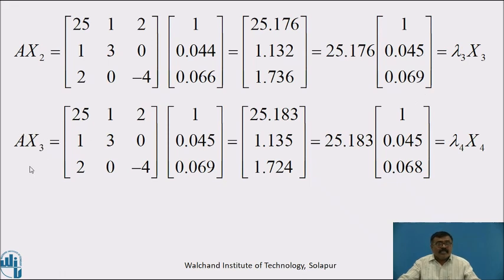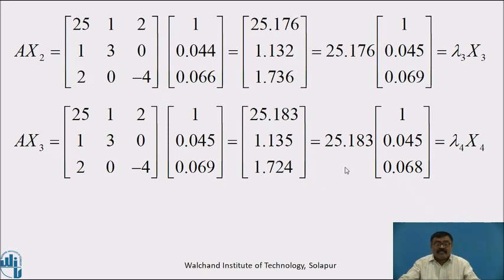Fourth iteration: A × X3 = [25, 1, 2; 1, 3, 0; 2, 0, -4] × [1; 0.045; 0.069]. Taking the multiplication, we get the matrix [25.183; 1.135; 1.724]. Taking 25.183 as common factor and simplifying, we get 25.183 × [1; 0.045; 0.068] = λ₄ × X4, where λ₄ = 25.183 and X4 = [1; 0.045; 0.068].